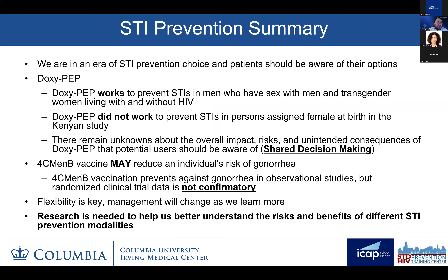To summarize: we're in the era of STI prevention and patients should be aware of their options. DOXYPEP works to prevent STIs in men who have sex with men and transgender women living with and without HIV. DOXYPEP did not work to prevent STIs in persons assigned female at birth in the Kenyan study. There remain unknowns about the overall benefits, risks, and implementation of DOXYPEP, which really highlights the importance of shared decision-making with patients. 4CMenB may reduce an individual's risk of gonorrhea—it prevented it in observational studies, but randomized clinical trial data are not yet confirmatory. Flexibility is going to be key, and management will change as we learn more. Research is needed to better help us understand the risks and benefits of different STI prevention modalities.